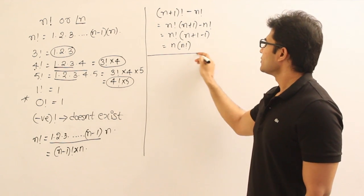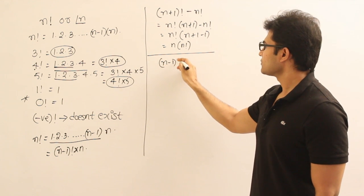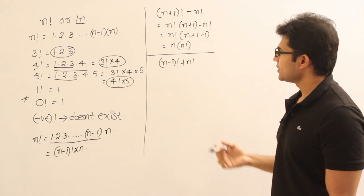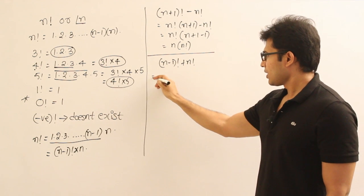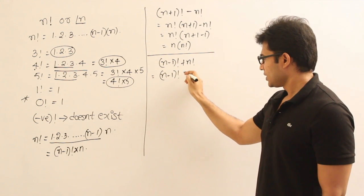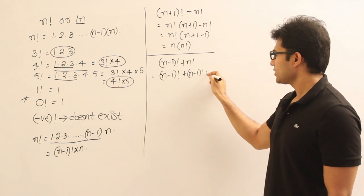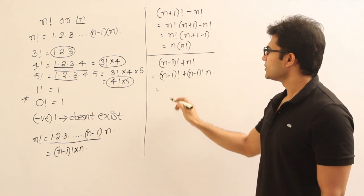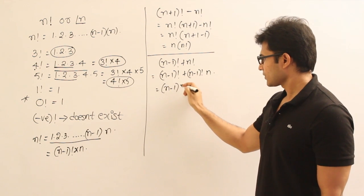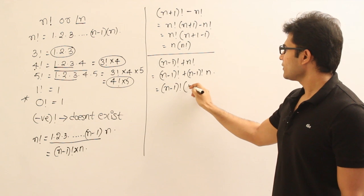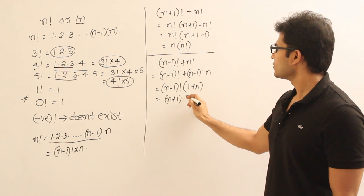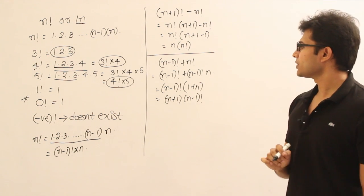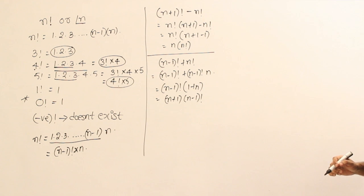Similarly, consider (n−1) factorial plus n factorial. We often encounter such expressions when solving problems. You can write it as (n−1) factorial plus (n−1) factorial × n. Pulling out (n−1) factorial as common leaves 1 + n, so the result is (n+1) × (n−1) factorial.